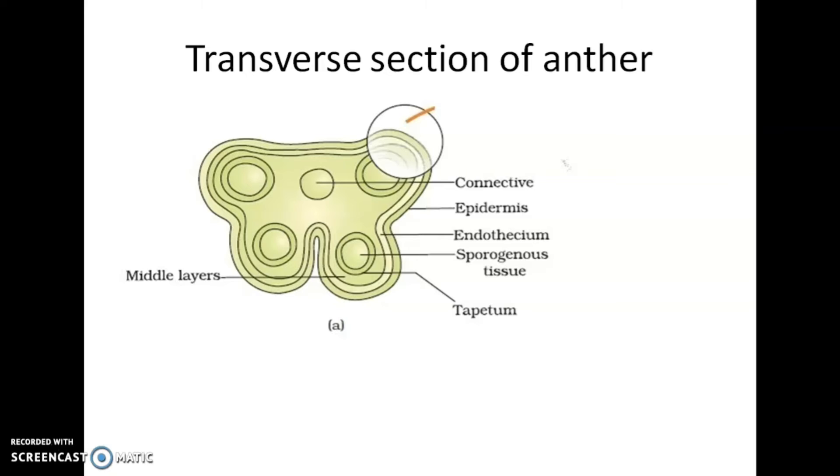The last layer, tapetum, nourishes the developing pollen grains. As we all know, inside there is sporogenous tissue from which the gametes will develop. So for the development of these gametes, tapetum provides nourishments. When the anther is young, a group of compactly arranged homogenous cells called the sporogenous tissue occupies the center of microsporangium.